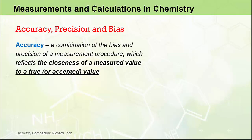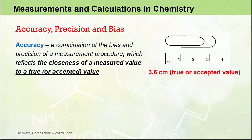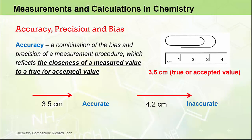The definition of accuracy is a combination of the bias and precision of a measurement procedure, which reflects the closeness of a measured value to a true or accepted value. For example, if we agree that the length of this paper clip is 3.5 centimeters, we can refer to this as the true or accepted value. If somebody measures it and gets 3.5 centimeters or close to it, we would say that measurement is accurate. If however somebody measured it to be 4.2 centimeters, we would say that measurement is inaccurate.